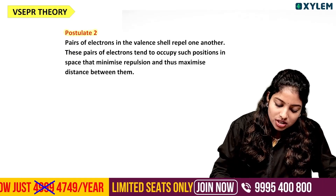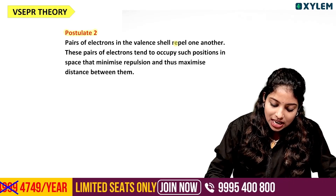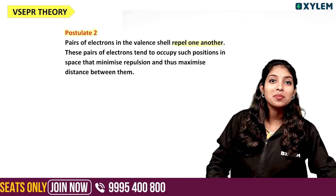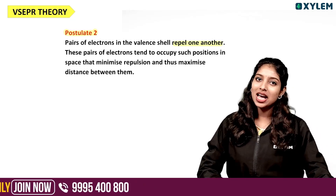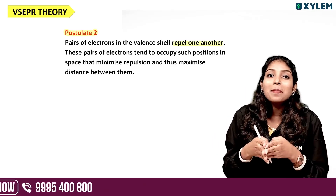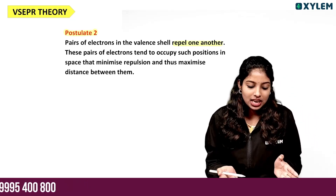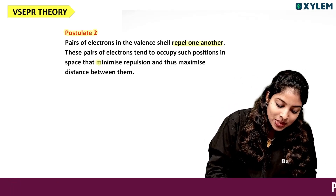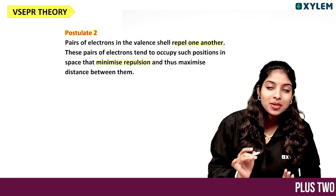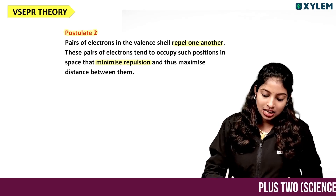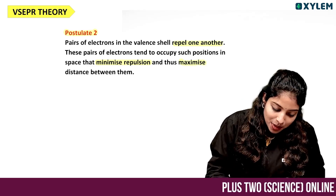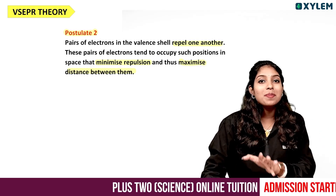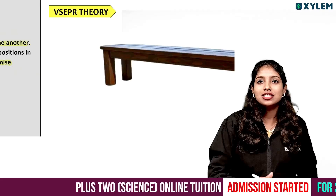Pairs of electrons in the valence shell repel each other. They do repel molecules. Repulsion is minimized at maximum distance. Minimum repulsion occurs at maximum distance.